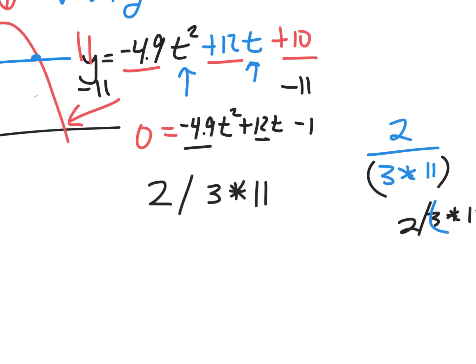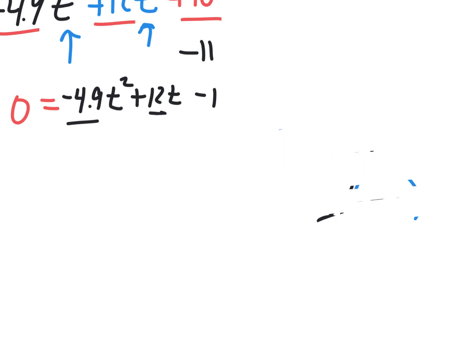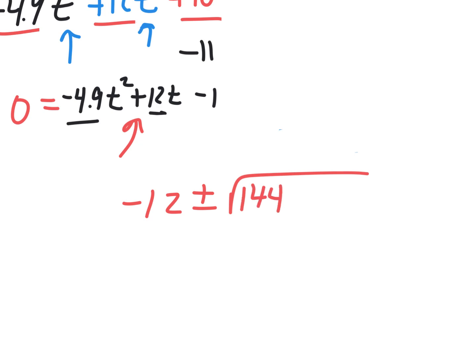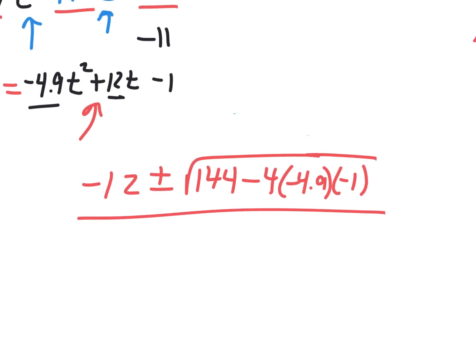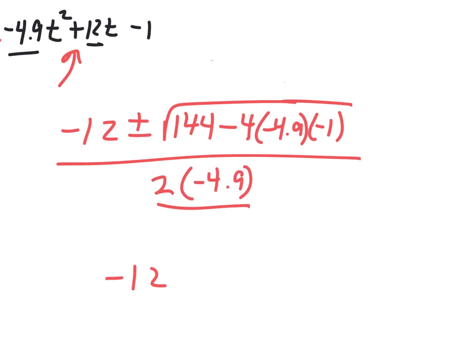Back to this problem. The quadratic formula: x equals negative B, which in this case is negative 12 — some people say 'opposite B' because if this number is negative, it helps. Negative B is negative 12. Plus or minus the square root of B squared, which is 144, minus 4 times A, which is negative 4.9, times C, which is negative 1. If you're smart, you're not going to do all of this on a calculator — you're going to do some of it in your head. You can do negative 4.9 doubled and times by negative 1 in your head.